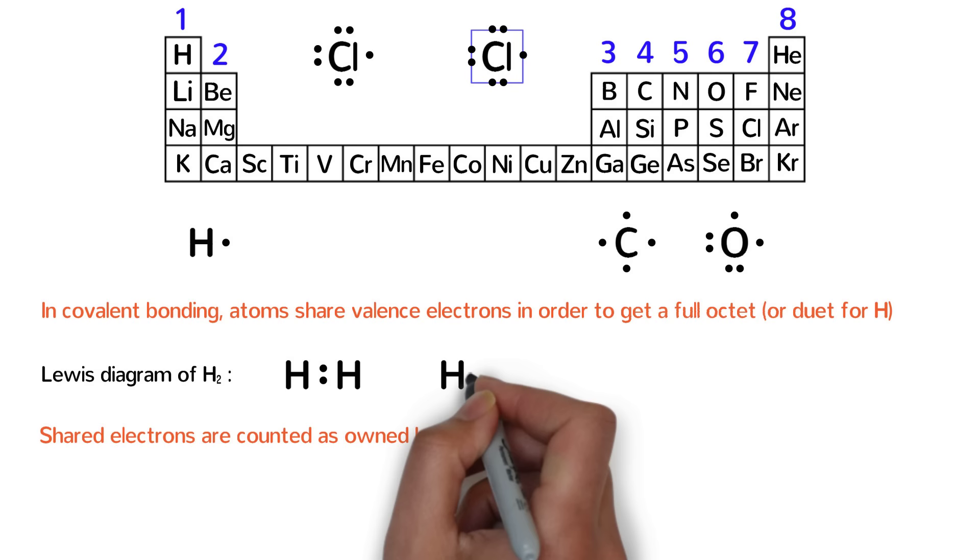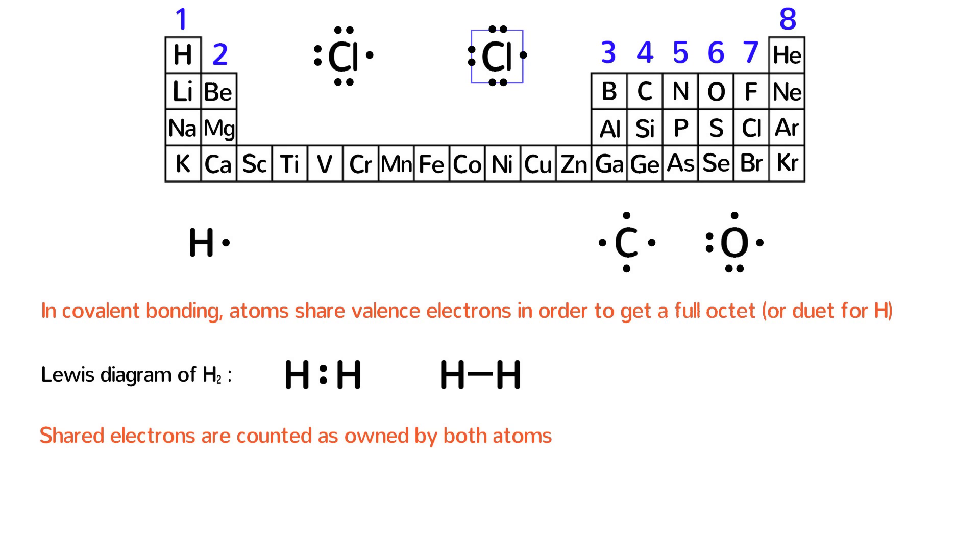Now, we normally draw hydrogen and other molecules like this with lines to represent shared electrons and dots only for non-bonding electrons. These two diagrams of a hydrogen molecule are equivalent because one line, which is a single bond, represents two shared electrons.